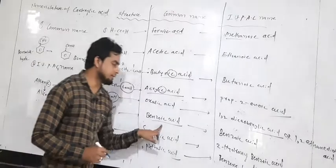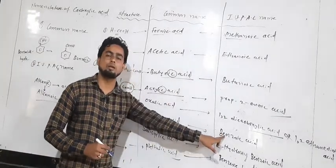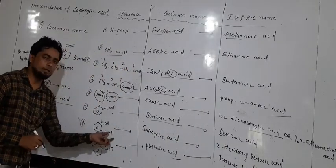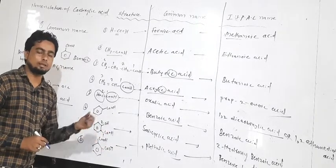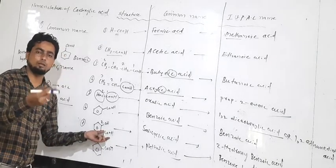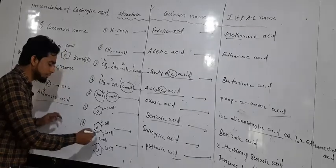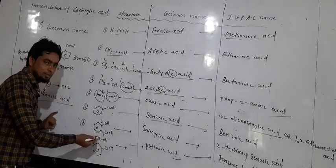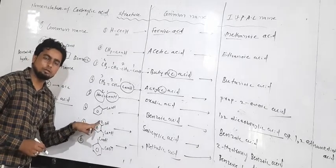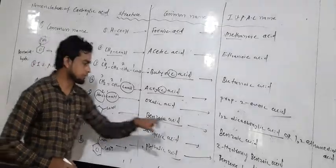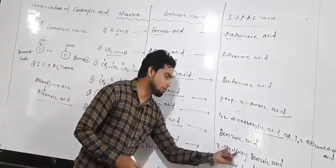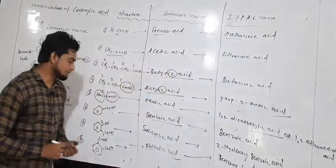Next, the aromatic acid benzoic acid: the common name and the IUPAC name are both benzoic acid. Number seven: this compound contains two functional groups — one is an alcohol and second is a carboxylic acid. We number from the carbon of the acid first, then name the first functional group as 'hydroxy.' So we get 2-hydroxybenzoic acid.